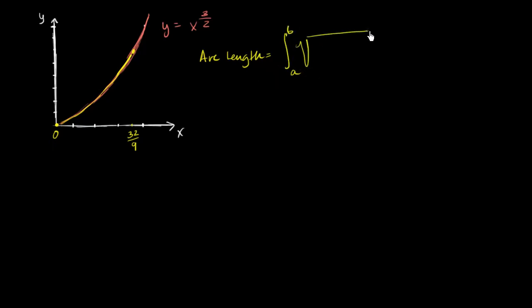So it's the square root of one plus f prime of x squared dx. And in this case, that's going to be the definite integral from zero to 32 over nine of the square root of one plus, now what's the derivative? If f of x is x to the three halves, then f prime of x is going to be three halves x to the one half. And we picked this particular function because it simplifies quite well when we put it under the radical.